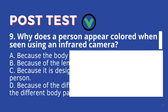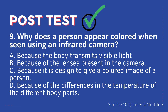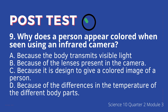9. Why does a person appear colored when seen using an infrared camera? A. Because the body transmits visible light, B. Because of the lenses present in the camera, C. Because it is designed to give a colored image of a person, D. Because of the differences in the temperature of the different body parts.